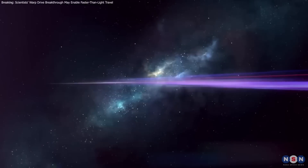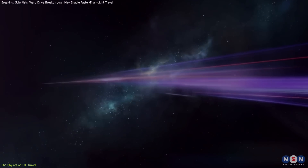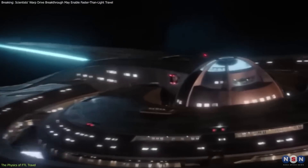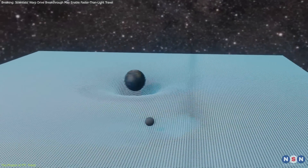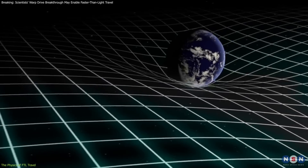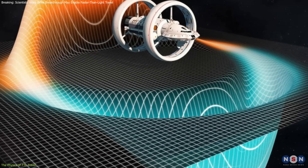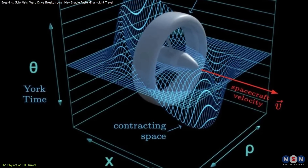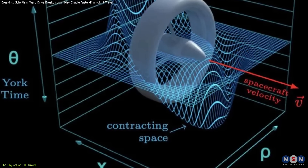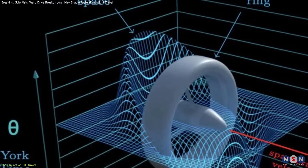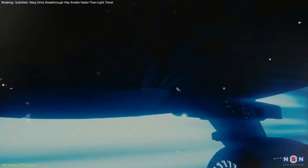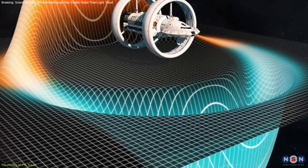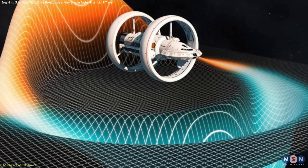Warp drives, often featured in tales of interstellar voyages, hold a place in both popular culture and serious scientific discussion. Rooted in the principles of general relativity, a warp drive theoretically enables faster-than-light travel by manipulating spacetime itself. This concept, proposed by physicist Miguel Alcubierre in 1994, involves creating a bubble of flat spacetime around a spacecraft, then contracting space in front of it while expanding it behind. This method suggests a ship could travel at several times the speed of light without violating Einstein's speed limit.